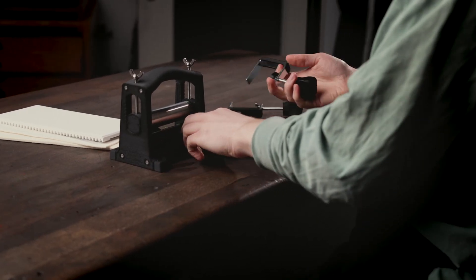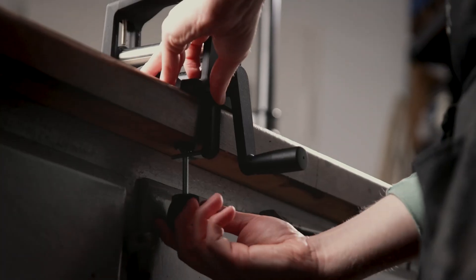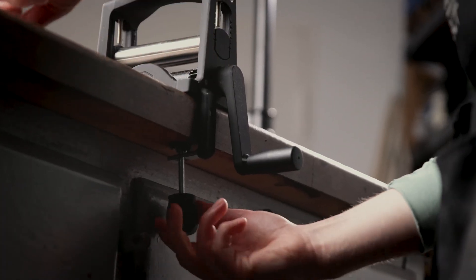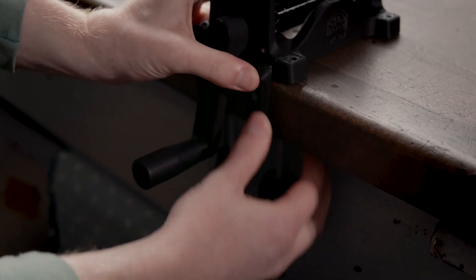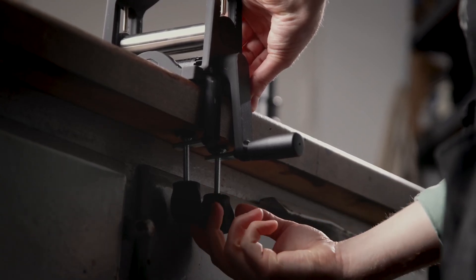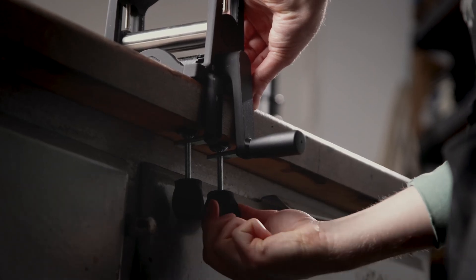So let's get started with this. I usually use both table clamps to fix my press in place. There's two slots on the side of the press that perfectly fit these clamps. And you can use the four holes on the little feet of the press to screw your press to your working surface. But I think that these clamps do a good job of keeping it in place.